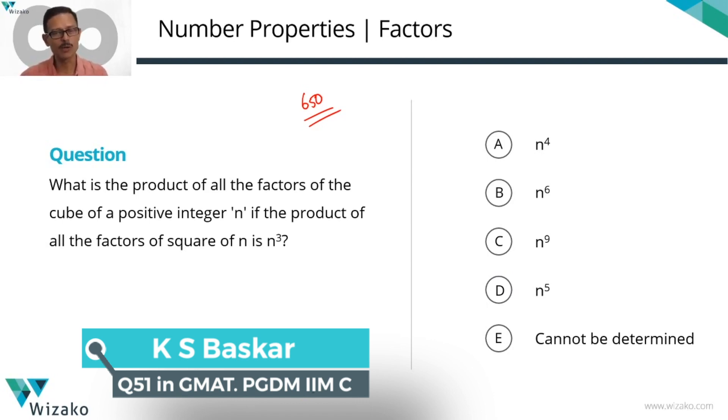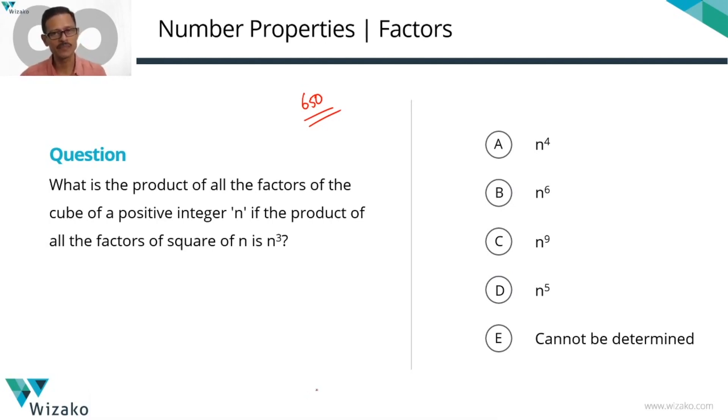The first one is from number properties. Concept tested is number of factors and what kind of factors certain types of numbers have. What is the product of all the factors of the cube of a positive integer n? We need to find out the product of all the factors of the cube of a positive integer n if the product of all the factors of the square of n is n cube.